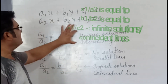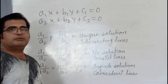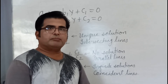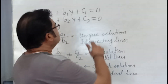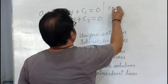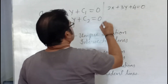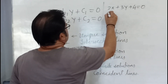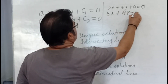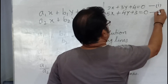You have to solve only when a1/a2 is not equal to b1/b2. You may not have understood this in symbolic form, so let us take an example. Suppose equation 1 is 2x + 3y + 4 = 0 and equation 2 is 5x + 4y + 3 = 0.